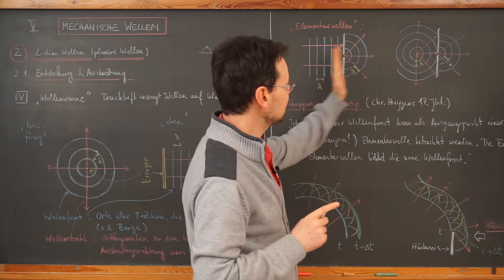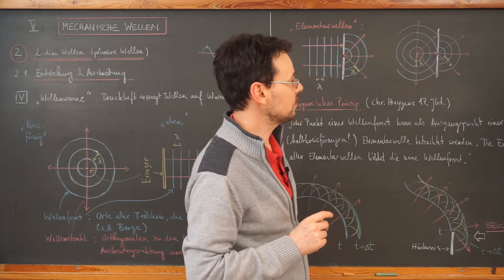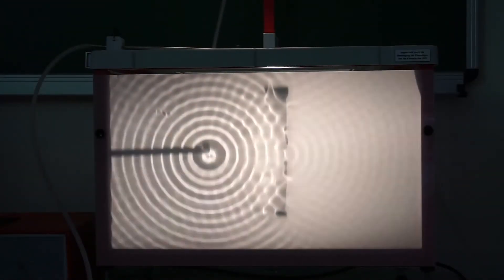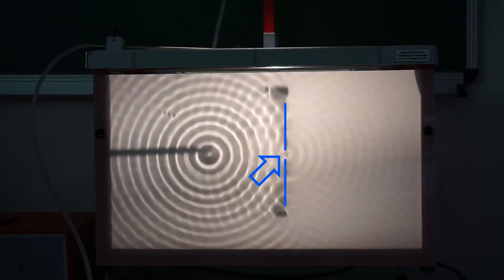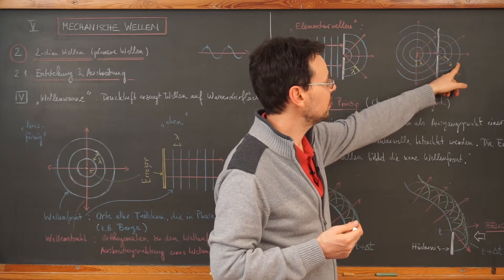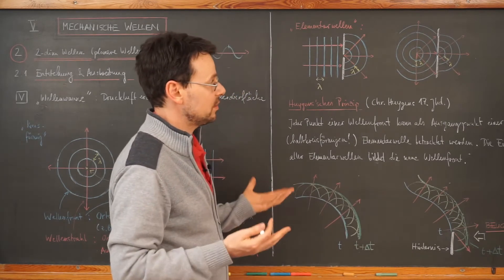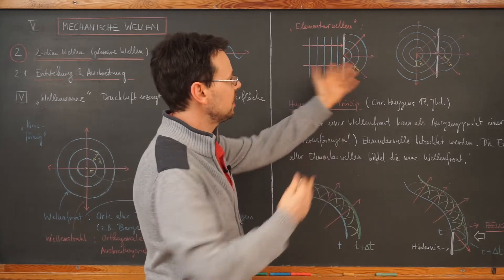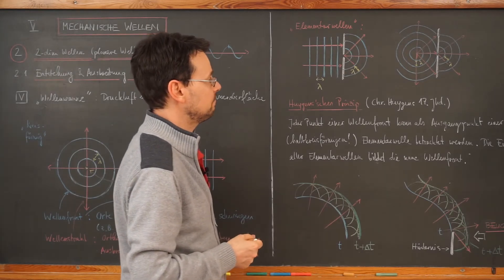Auch noch wichtig, dabei ist es egal, ob das hier eine ebene Welle war oder ob eine kreisförmige Welle auf dieselbe Öffnung zuläuft. Auch das schauen wir uns kurz an. Hinter diesem kleinen Spalt sieht man jetzt diese halbkreisförmigen Elementarwellen. Also auch hier entstehen wieder genau solche halbkreisförmigen Elementarwellen und die Wellenlänge ist wieder gleich. Dementsprechend auch die Frequenz dieser Welle, weil die Ausbreitungsgeschwindigkeit ändert sich hier offensichtlich nicht. Ich habe rechts und links von dem Hindernis dieselbe Wassertiefe, dasselbe Wasser, damit gleiche Ausbreitungsgeschwindigkeit.